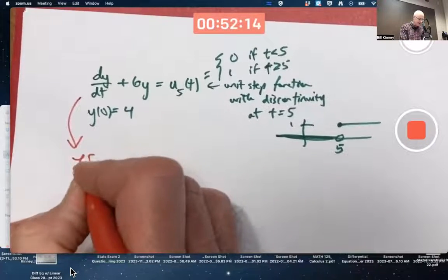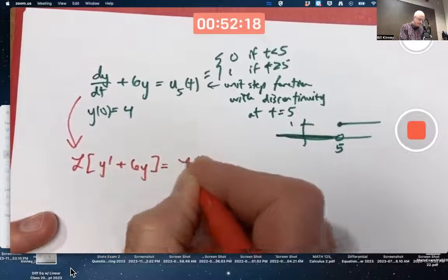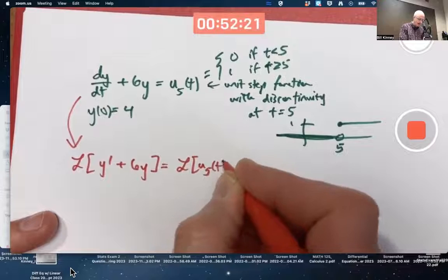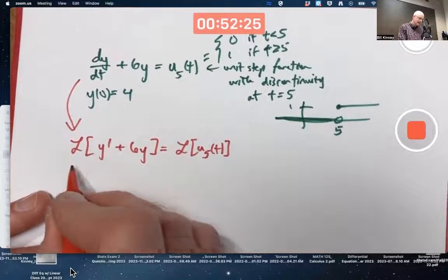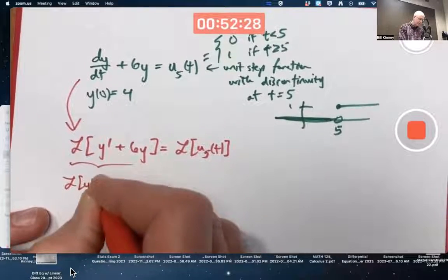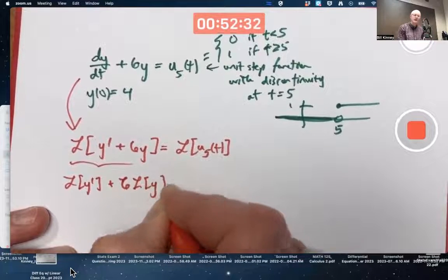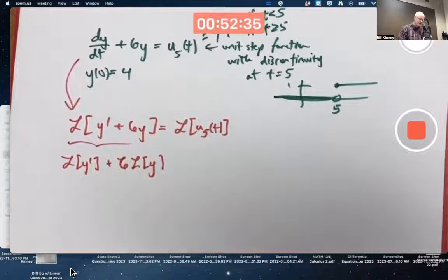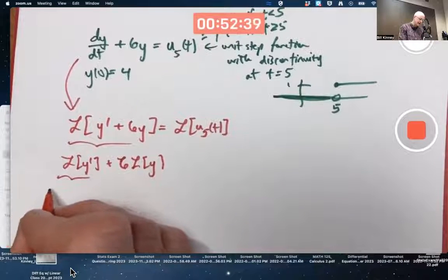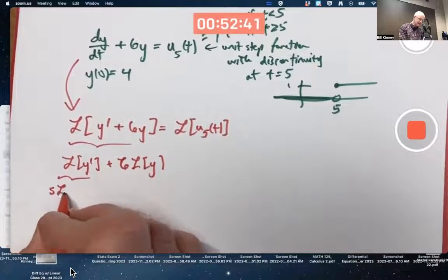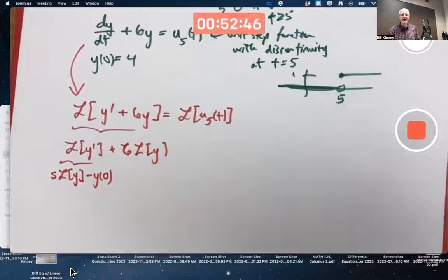Take the Laplace transform of both sides. But how are we going to take the Laplace transform of the right? Well, we have to figure it out. This one is the Laplace transform of y prime plus 6 times the Laplace transform of y, because the Laplace transform is a linear operator. It's a linear transformation. You also have that property, like we talked about last time, that the Laplace transform of the derivative is s times the Laplace transform of the function minus the initial condition, the initial value of the function.